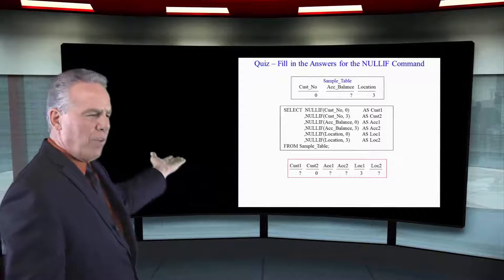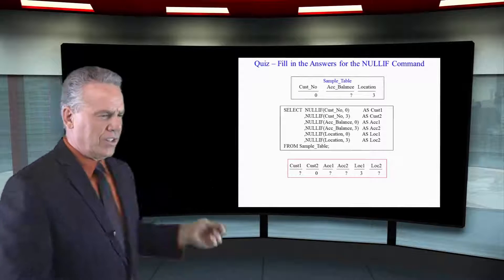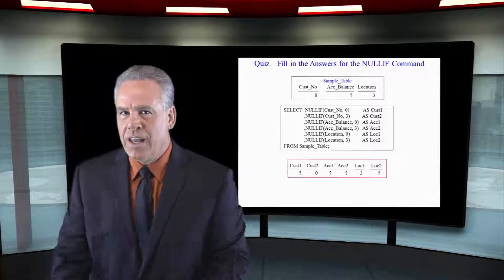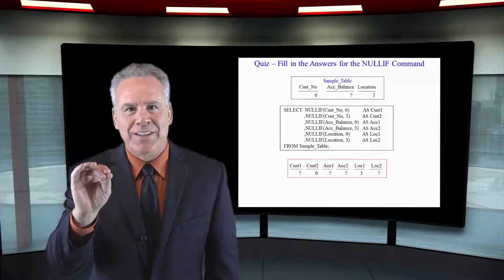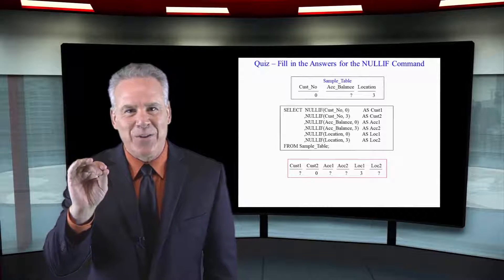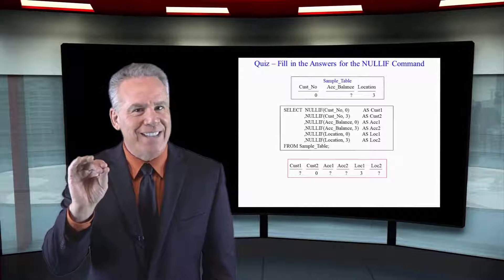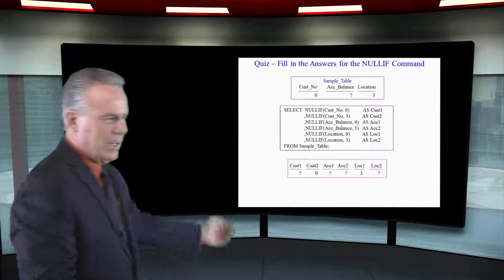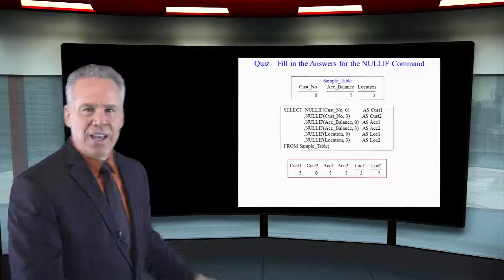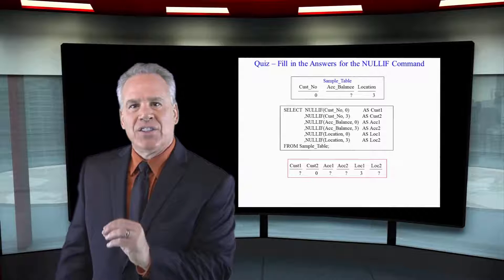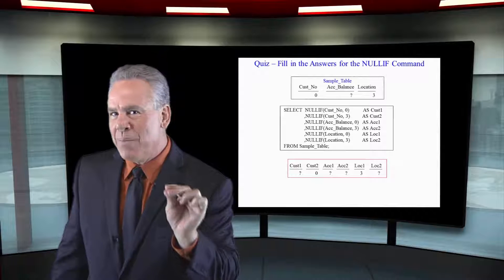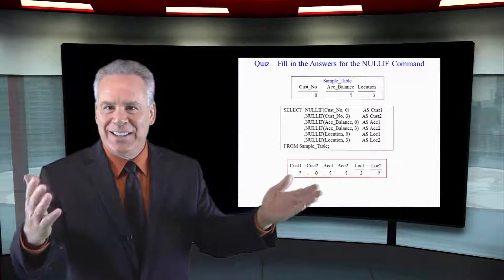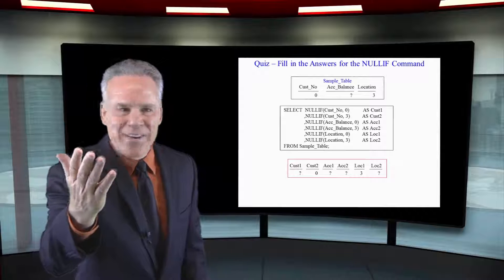Next, we go to the account balance and say NULLIF account balance, zero. It's not a zero, so leave it as is. Then we come in and say let's do the account balance again and see if it's a three. If it's a three, make it a null. It's not a three, so they just leave it at null.